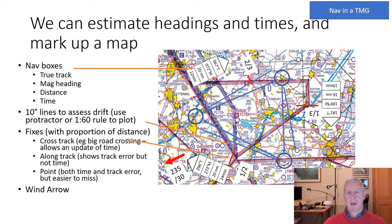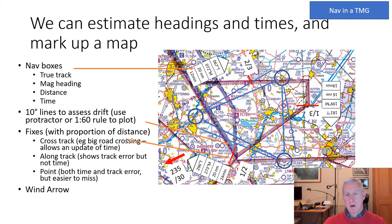Then we can estimate headings and times and mark up the map with nav boxes showing true track, magnetic heading, distance in nautical miles, and expected time. We also put 10-degree lines on in order to estimate our track error as we're flying, using either a protractor or the one-in-60 rule to plot them.